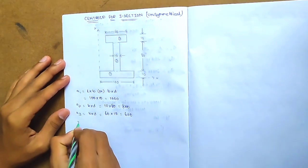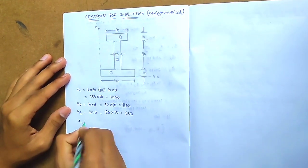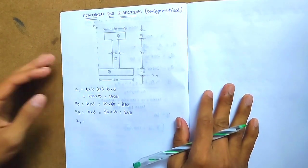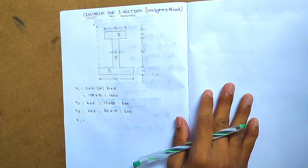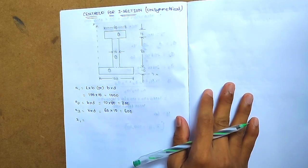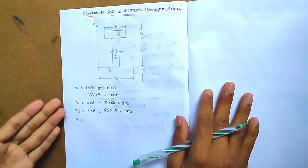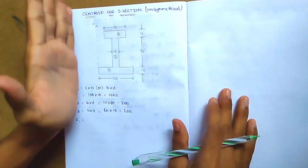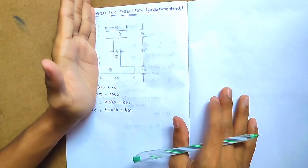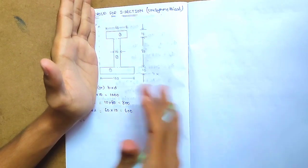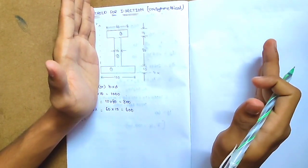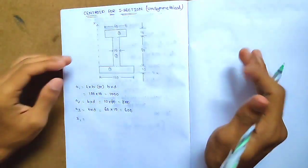60 into 10 gives 600. Now for x1 — as seen in the previous video — x1 value represents the distance from the y-axis. We calculate from the left side to the right side.